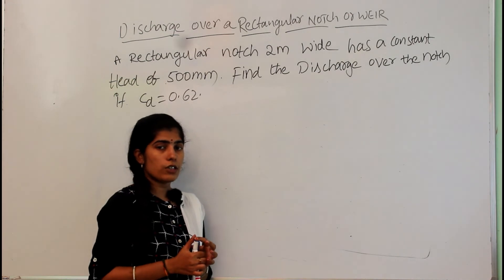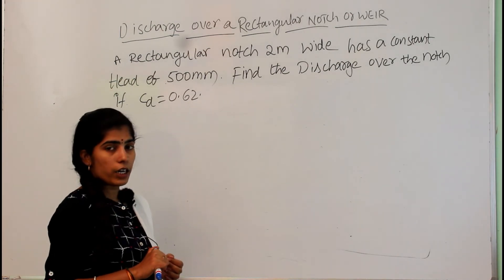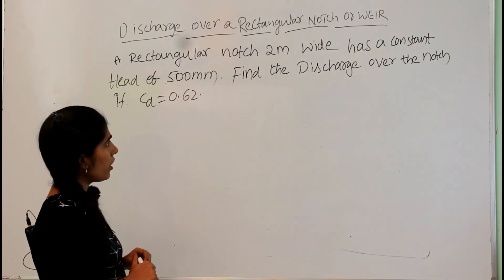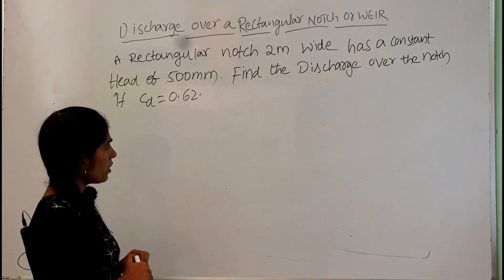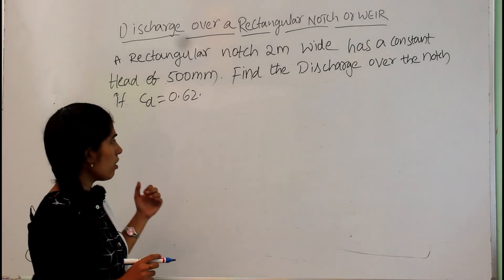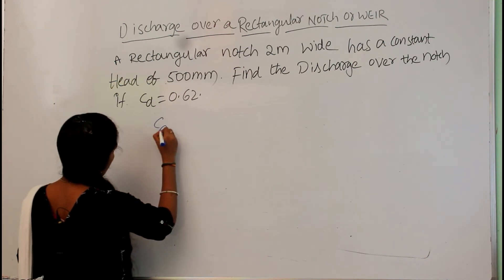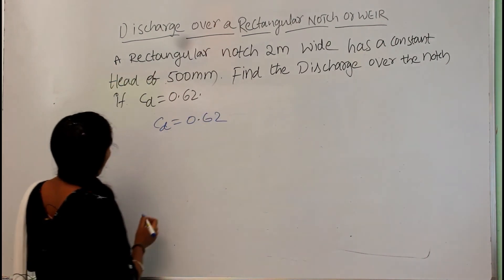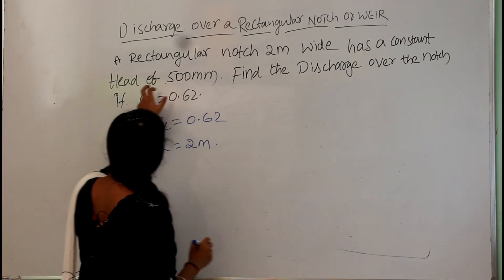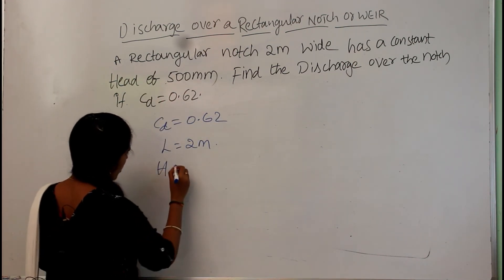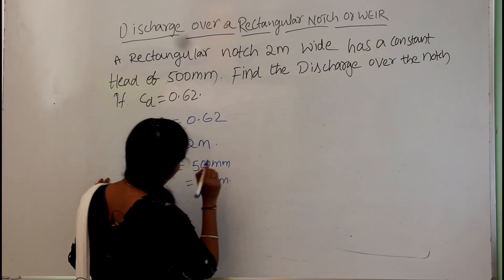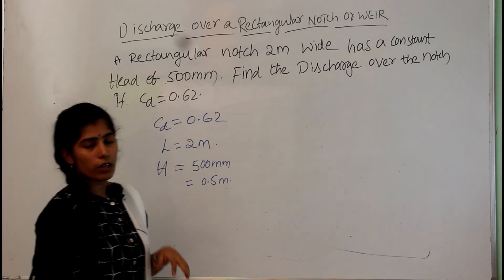Now let's solve a problem based on the rectangular notch or rectangular weir. The problem states: a rectangular notch 2 meters wide has a constant head of 500 mm. Find the discharge over the notch if the coefficient of discharge Cd = 0.62. Writing down the given data: Cd = 0.62, length L = 2 meters, and head H = 500 mm = 0.5 meters.